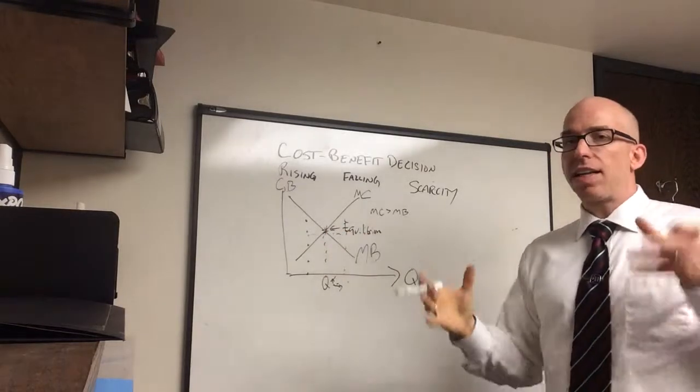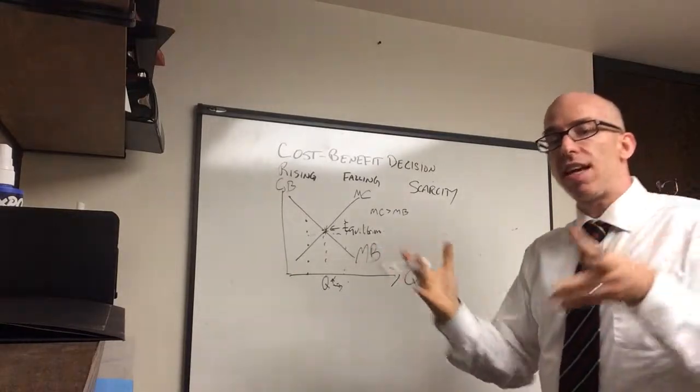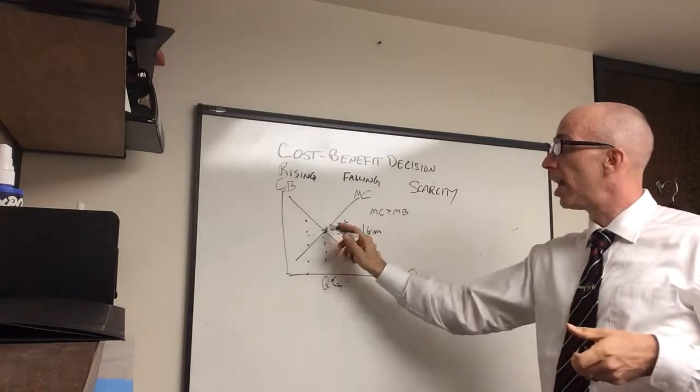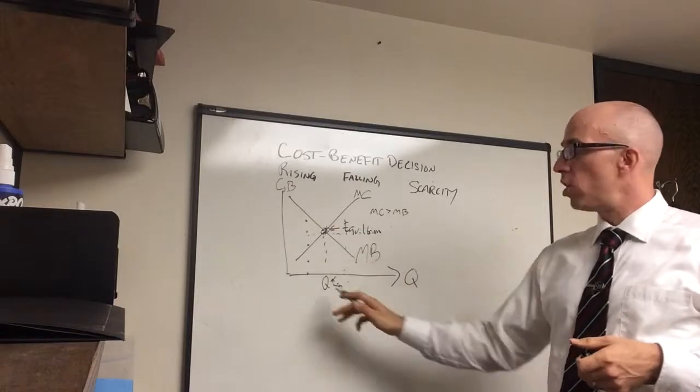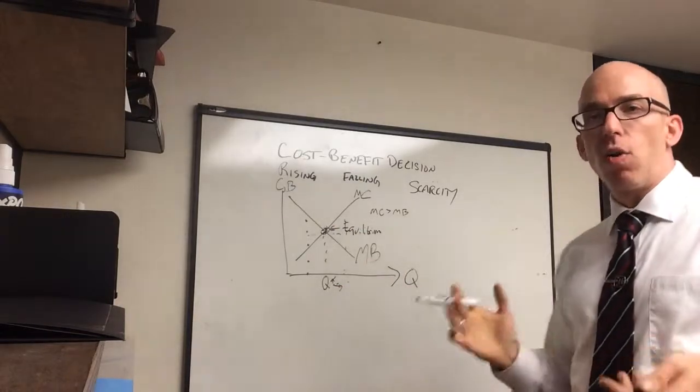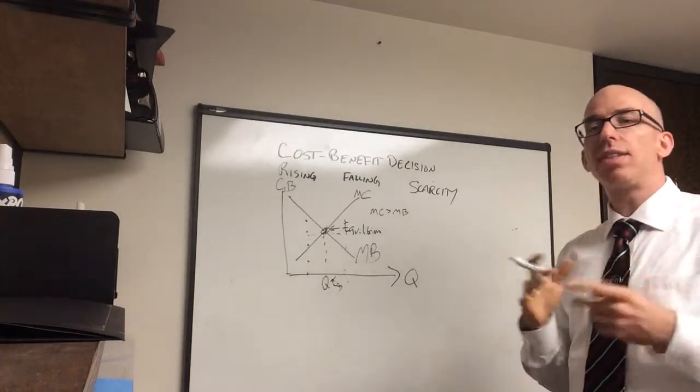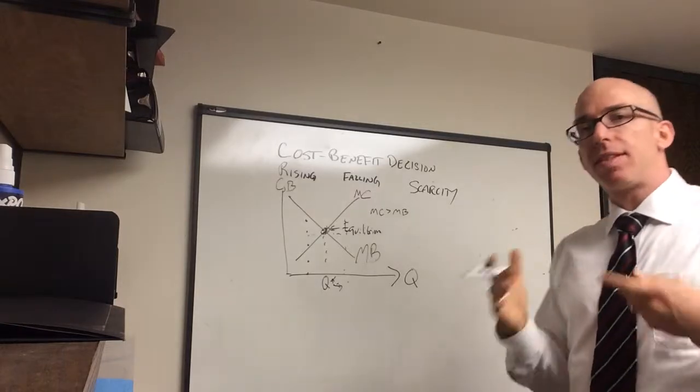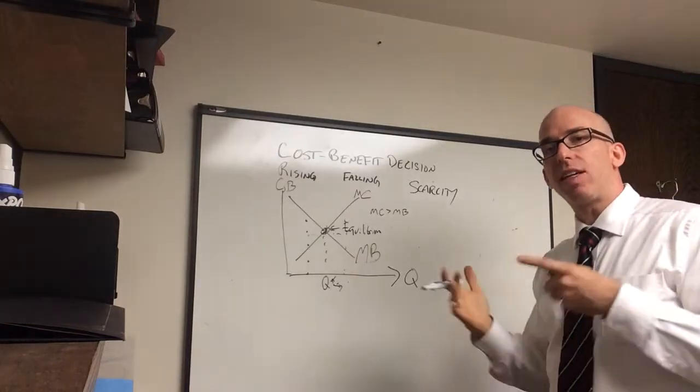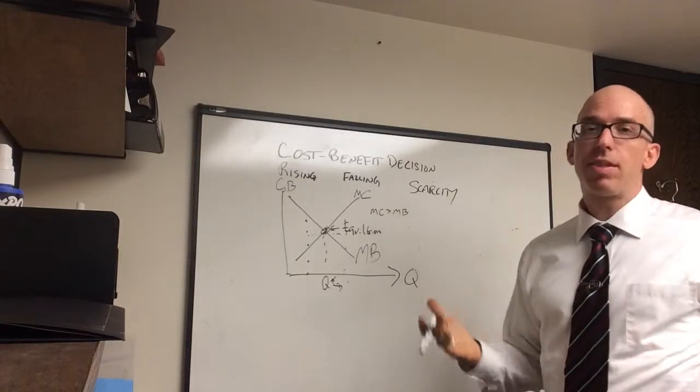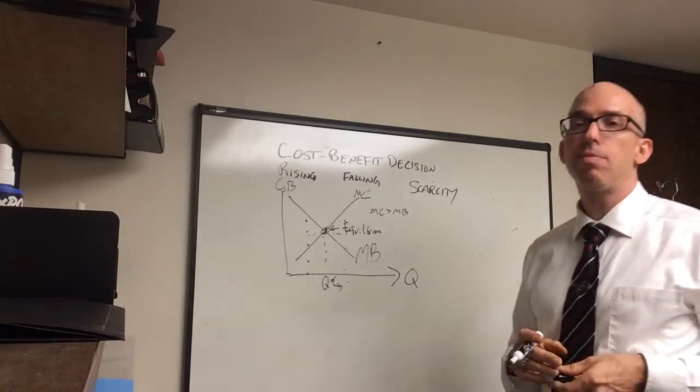This is too much. And the economy or the economic decision is going to settle at the point where you're doing the just right amount right here at equilibrium. You're not underdoing it, and you're not overdoing it. So, all decisions are made this way. People decide when to stop doing something based on a cost-benefit decision. And other times, they decide to do more based on a cost-benefit decision.